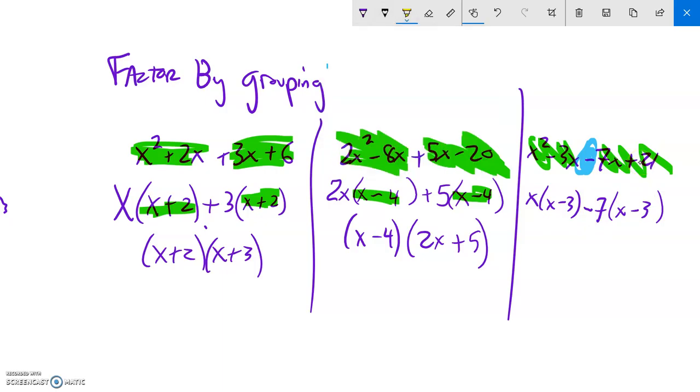So for my factor by grouping from here, those are the same. I can factor those out. x minus 3 times x minus 7.